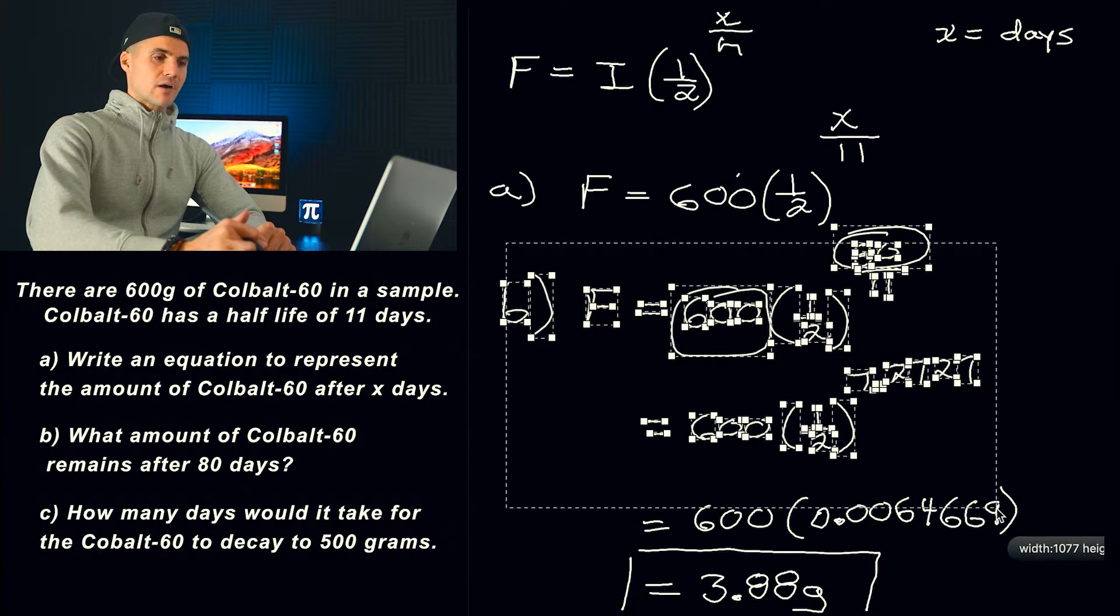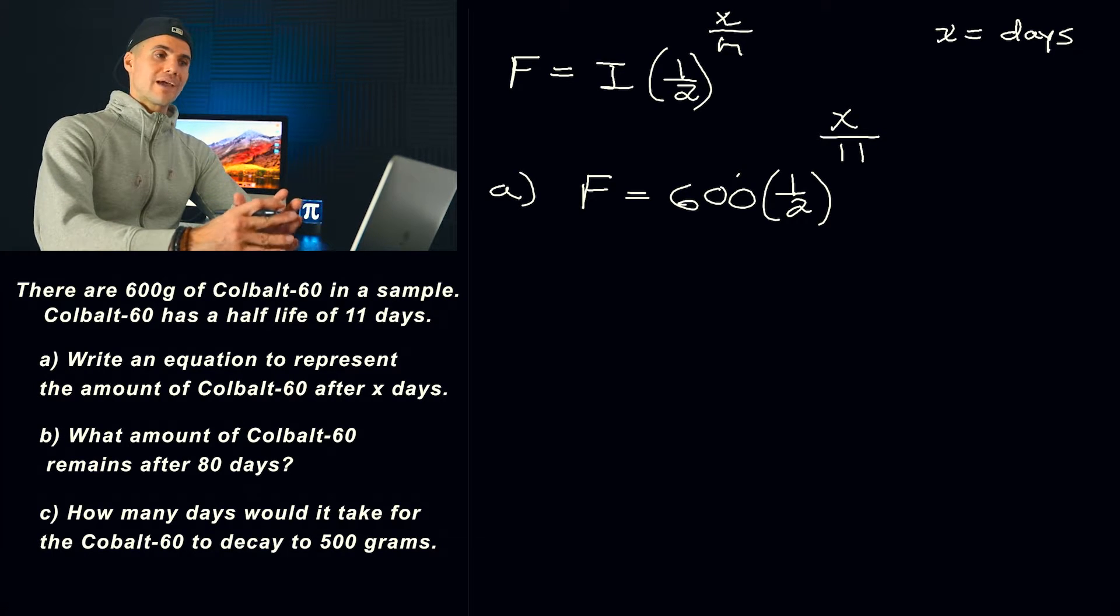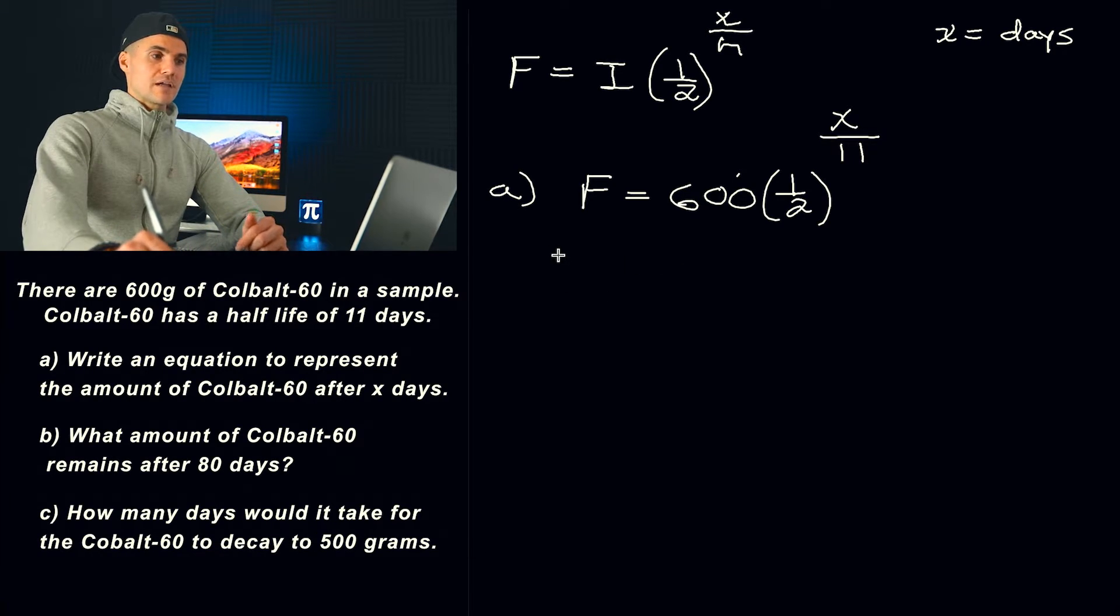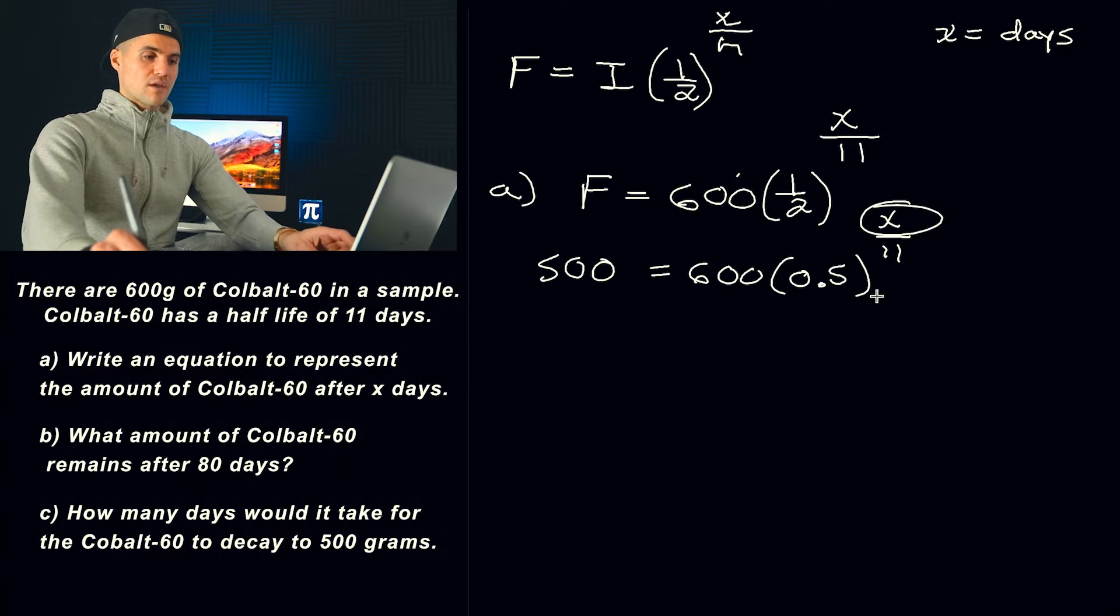Now in part C, they're asking how long is it going to take for the cobalt to decay to an amount of 500. So now we're going backwards here. Basically, they're giving us the final amount, 500. I'm going to rewrite this here as 0.5 because there's just going to be some algebra, more algebra here to do this. So I'll keep this in decimals. And then this is going to be x over 11.